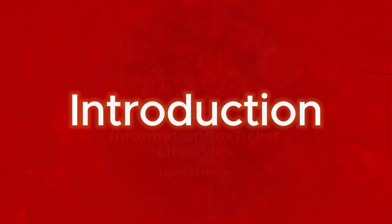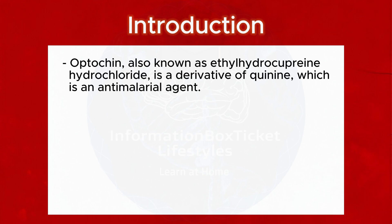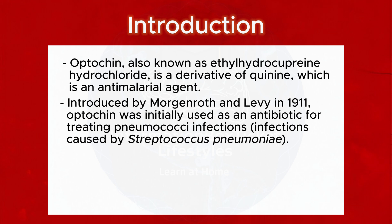Introduction to Optochin Susceptibility Test. Optochin, also known as ethyl hydrocuprine hydrochloride, is a derivative of quinine, which is an anti-malarial agent. Introduced by Morganroth and Levy in 1911, Optochin was initially used as an antibiotic for treating pneumococci infections — infections caused by Streptococcus pneumoniae.